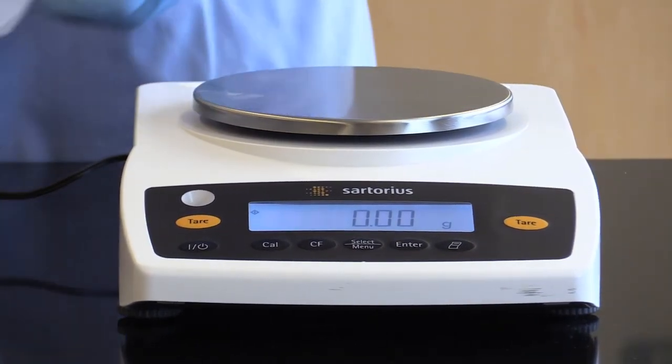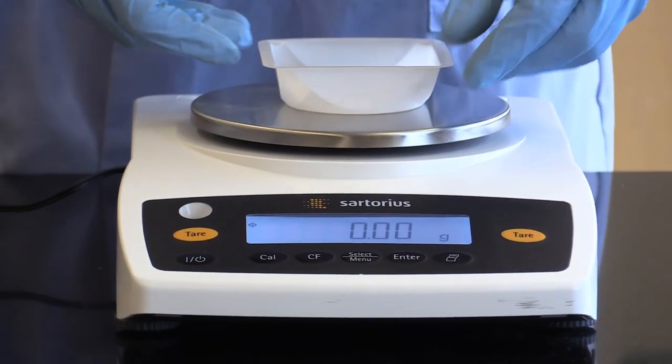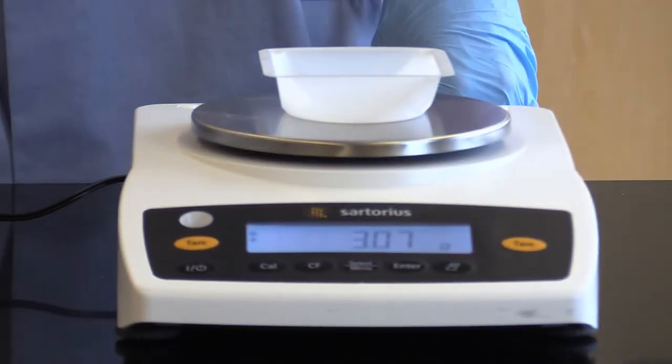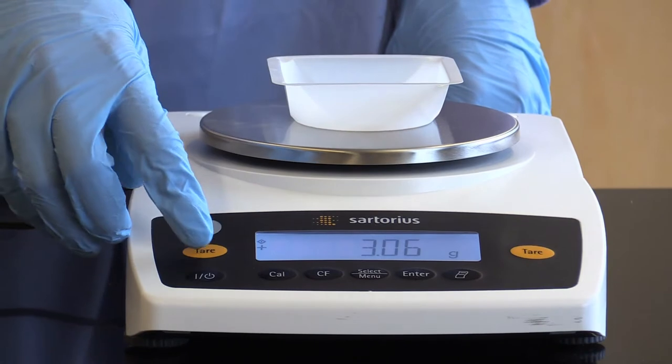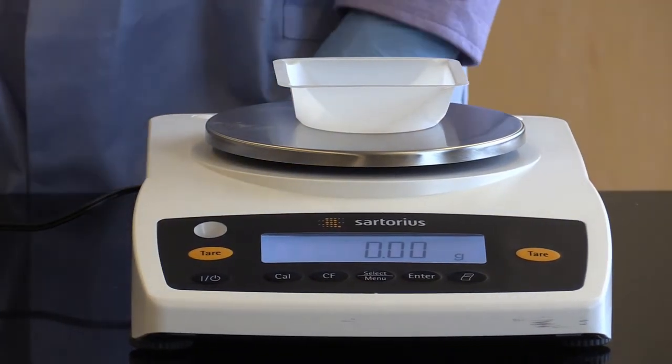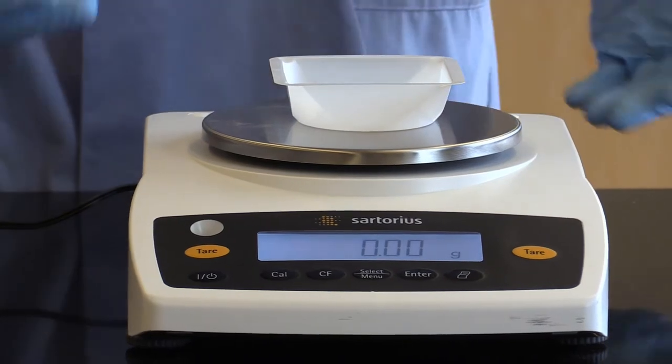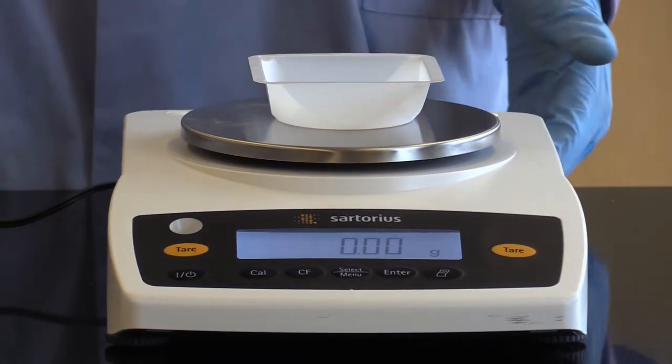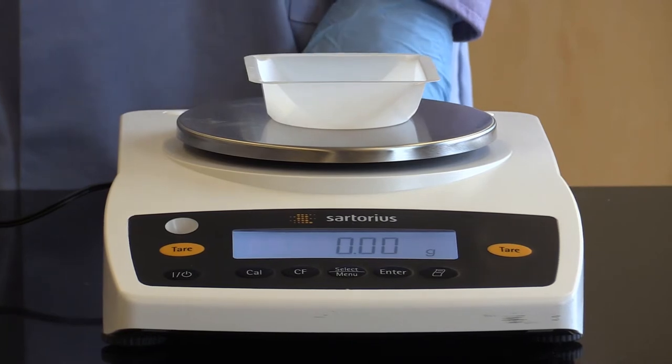And then we're going to place the weigh boat on the balance and then hit tare. What tare will do is zero the machine, so you should see 0.00 if you're using this type of balance. If you don't see all zeros, then you're going to want to hit tare again.